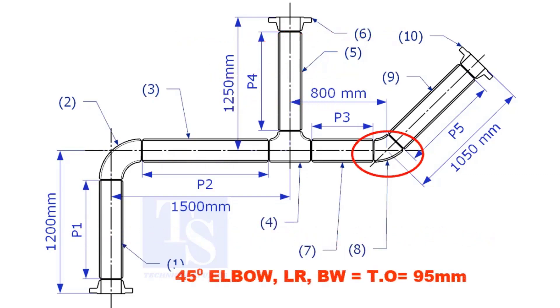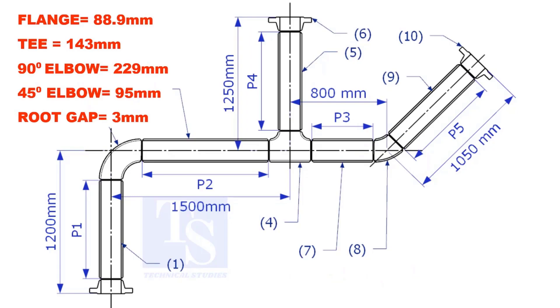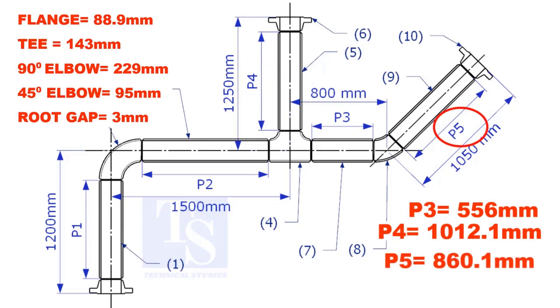Takeoff length of the 45 degree elbow is 95mm. The length of pipe P3, P4, and P5 are given. You can cross check if the answers are correct or not. Please check the description for this sketch.